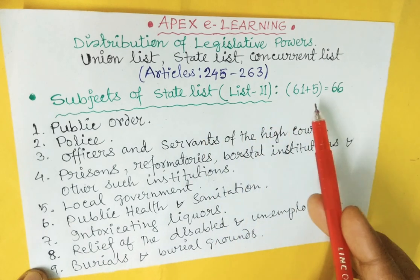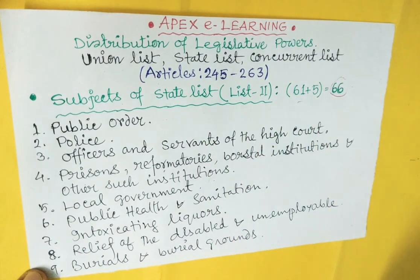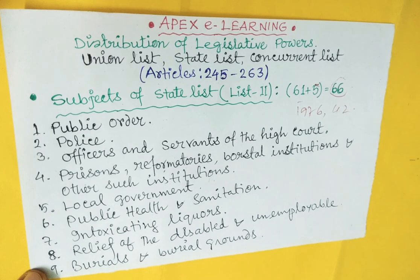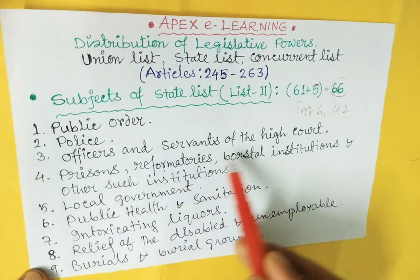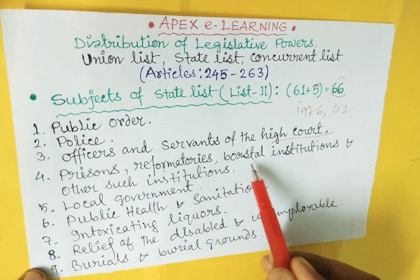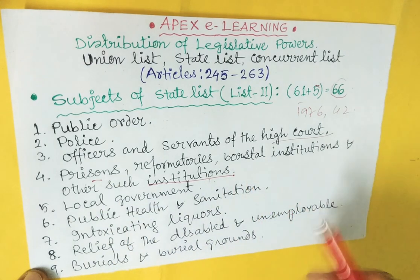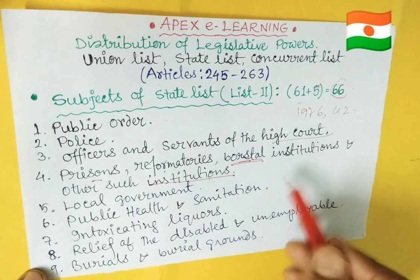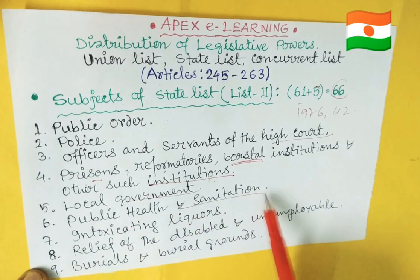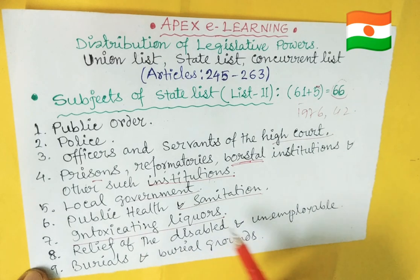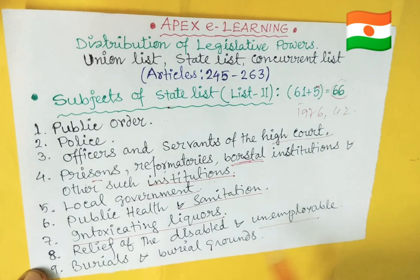This is the subject matter. The subject of the state list, list two, which originally had 61 subjects and now has 66. We are going to talk about the concurrent list as well. Under the state list: local government, public health and sanitation.